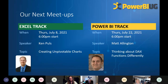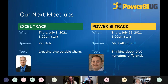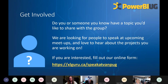Our next meetups coming up: I'll be taking the Excel track to talk about creating unpivotable charts in Excel — things like waterfall charts against the data model. Then I'm excited to welcome Matt Allington, who will talk about 'Thinking About DAX Differently' — that's our Power BI track on Thursday, July 22nd. The meetup slots are open so please register. If you're interested in speaking, fill out the survey and we'd love to have new speakers.